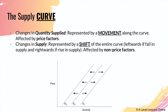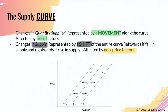When there is a change in quantity supplied, it is represented by a movement along the curve, and this is affected by price. On the other hand, when there is a change in supply, there will be a shift in the entire curve — leftwards if there is a fall in supply and rightwards if there is an increase in supply. This is the exact same thing as demand. A change in supply is represented by a shift, and this is affected by non-price factors, which we will go through later on.